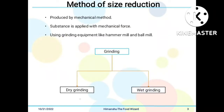Regarding methods of size reduction, mechanical force is applied using grinding equipment like ball mills, hammer mills, etc. Grinding is generally divided into two types: dry grinding and wet grinding. Dry grinding (milling) is done for the production of tablets and capsules, while wet grinding is used for the production of suspensions and emulsions.